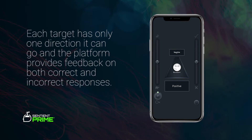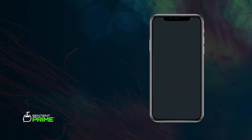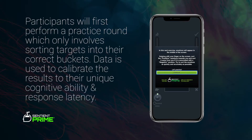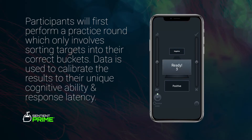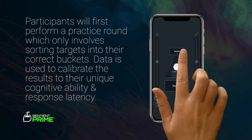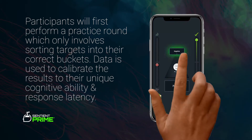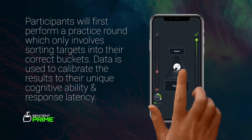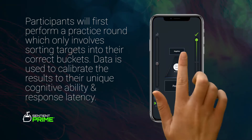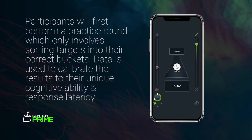Each target has only one direction it can go, and the platform provides feedback on both correct and incorrect responses. If incorrect, the participant will need to sort the target in the opposite direction. Every implicit test is comprised of two rounds. The participant will first perform a practice round which only involves sorting targets into their correct buckets. In addition to socializing the participant to the mechanics and elements of the task, the data collected from this round is used to calibrate the results to their unique cognitive ability and response latency variability.